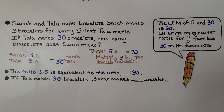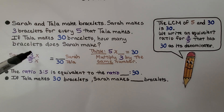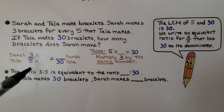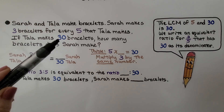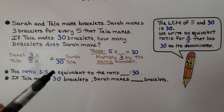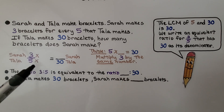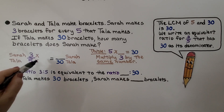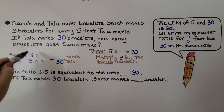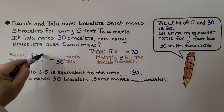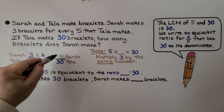Sarah and Tala make bracelets, and Sarah makes three bracelets for every five that Tala makes. If Tala makes thirty bracelets, how many bracelets does Sarah make? We have our ratio: three bracelets for every five, so three to five for Sarah and Tala. Tala makes thirty — she's the second term. Five times some number is thirty; that would be five times six. We multiply the three by the same number and we get eighteen.